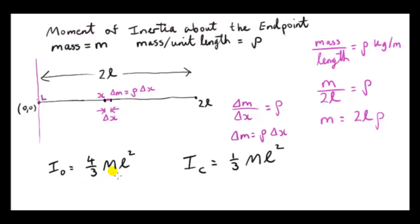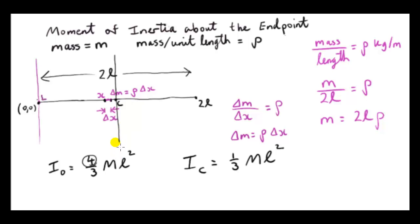Comparing the two results: the moment of inertia about an endpoint is (4/3)ML², while the moment of inertia about the center of mass is (1/3)ML². The endpoint value is four times greater. This means it is four times more difficult to rotate the rod about an axis through its end than about an axis through its center — which matches our everyday experience.